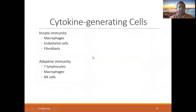Cytokine-generating cells: in innate immunity, these include macrophages, endothelial cells, fibroblasts, and NK cells. In adaptive immunity, the key cells are T lymphocytes and macrophages.